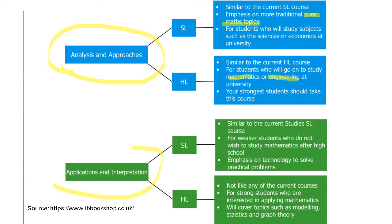The second choice would be Applications and Interpretation, also with standard level and high level. Students who are interested in modeling, statistics, or graph theory may choose this, and those who take it are more likely to go into applied mathematics in college.